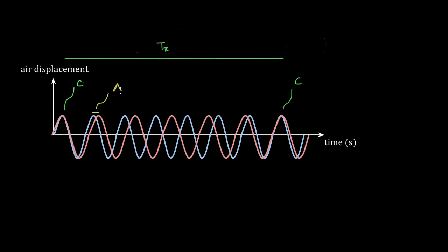That amount is just the difference in periods between the two waves — the period of wave one (the red wave) minus the period of wave two (the blue wave). We use this order so we don't get a negative number, since the period of the red wave is a little longer. So this is how out of phase in time the two peaks are getting per cycle. If I waited one cycle, they'd be that far apart; two cycles, twice as far; three cycles, three times as far.